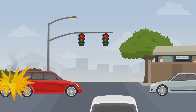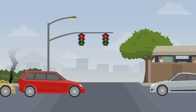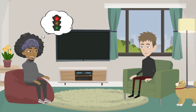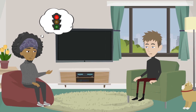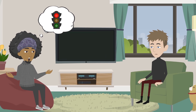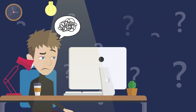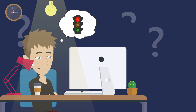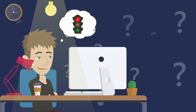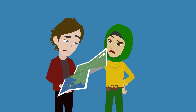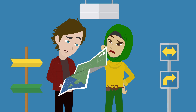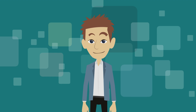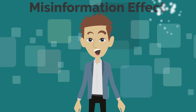Picture this. You witness a car running a red light and later describe it to a friend. Your friend mistakenly recalls it as a stop sign and tells you so. Over time your memory starts to waver and you begin to believe it was a stop sign after all. This alteration of your original memory due to external influence is a prime example of the misinformation effect.